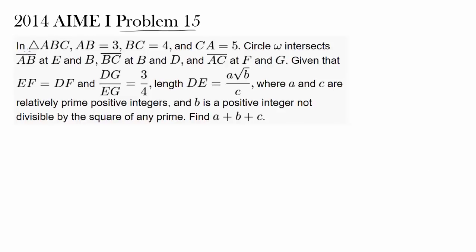Let's read the question. In triangle ABC, AB is 3, BC is 4, and CA is 5. Right away, we have ABC being a right triangle because 3 squared plus 4 squared equals 5 squared — 3, 4, 5 is a Pythagorean triple. So we know ABC is going to be a right triangle.